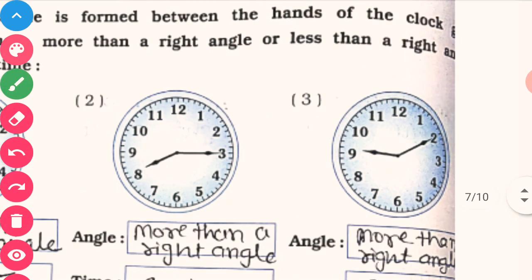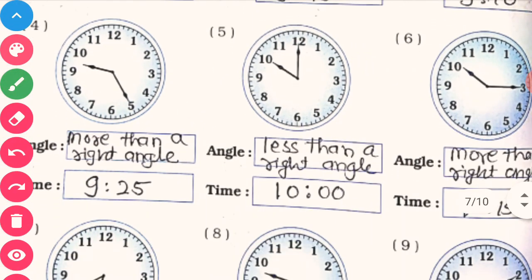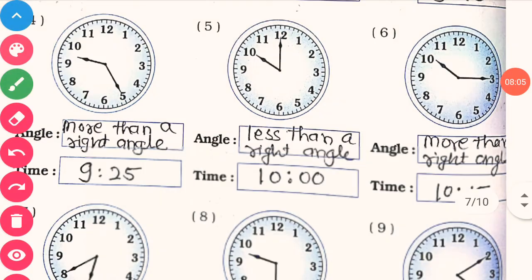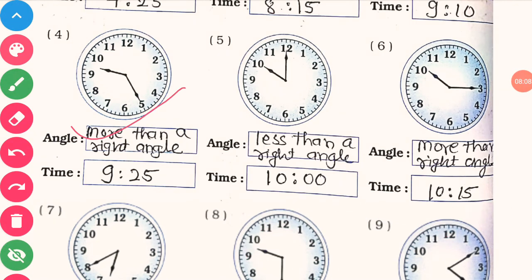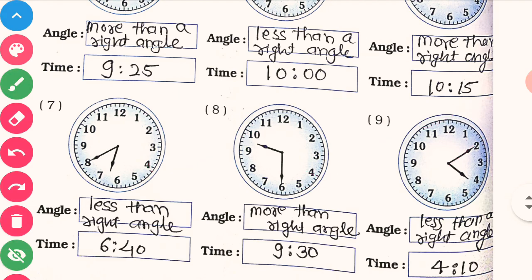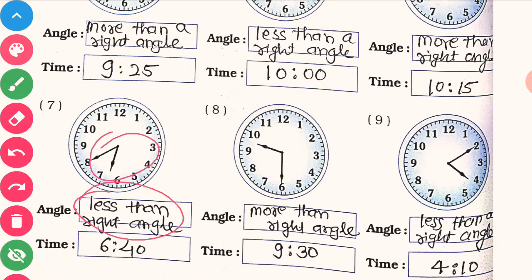And the angle between their hands is more than a right angle. So write here: more than right angle. Now, these sums are based on the same method I explained above. For the remaining clocks, first write the time, then decide what is the angle between the hands, and write less than or more than right angle.